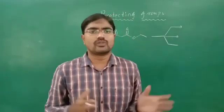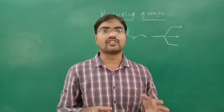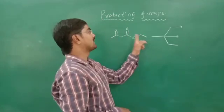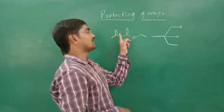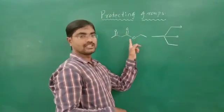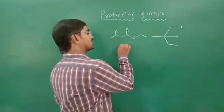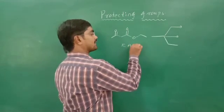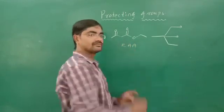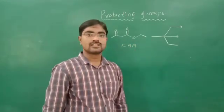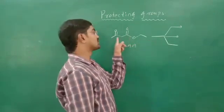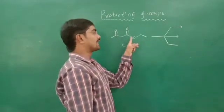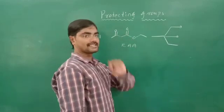I think everyone knows the structure of ethyl acetoacetate. In short, we can write it as EAA — ethyl acetoacetate. In this molecule, we have two functional groups: one is ketone, and another one is ester.